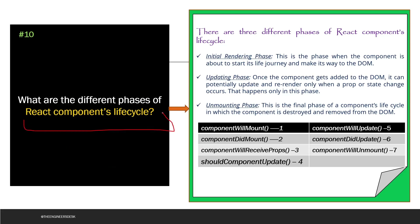The next question asks about the different phases of the React component lifecycle — this is a very frequently asked question. The first phase is the Initial Rendering phase, when the component is about to start its life journey and make its way to the DOM. The second phase is the Updating phase, where the component re-renders only when a prop or state change occurs. The third phase is the Unmounting phase, the final phase where the component is destroyed and removed from the DOM.